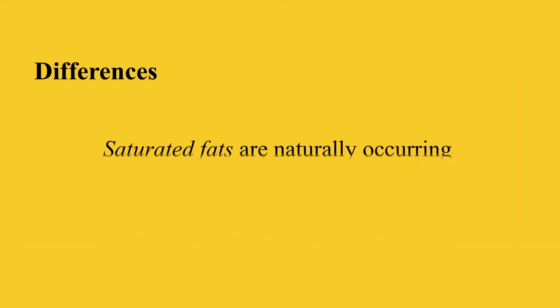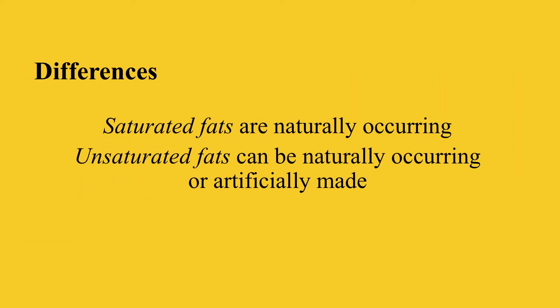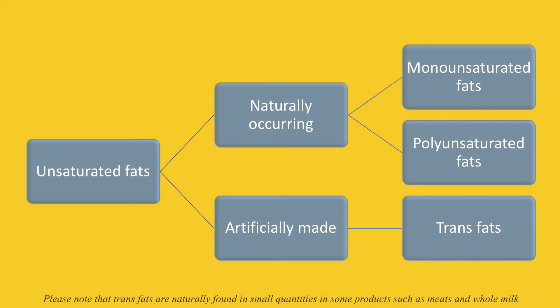Another difference is that saturated fats are naturally occurring, while unsaturated fats can be naturally occurring or artificially made. This schematic diagram will help you conceptualize which unsaturated fats are naturally occurring and which are artificially made. The naturally occurring ones are monounsaturated fatty acids and polyunsaturated fatty acids. Trans fats are artificially made, though they may also be found naturally in small quantities, such as in meats and whole milk.